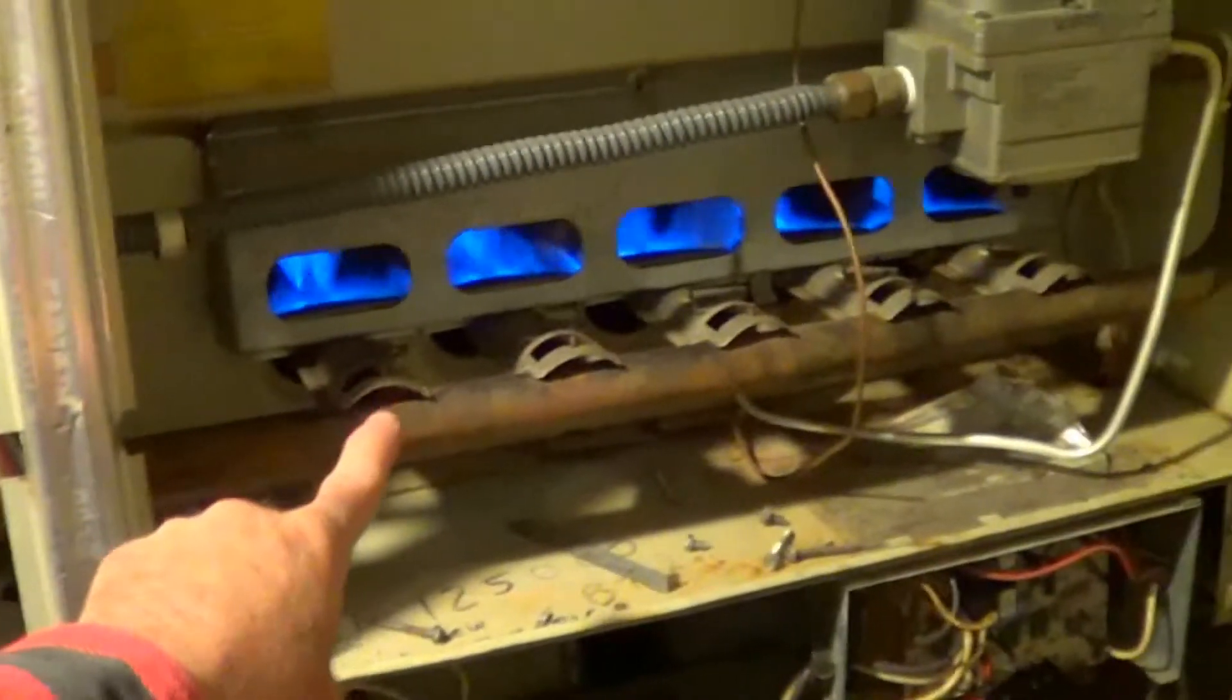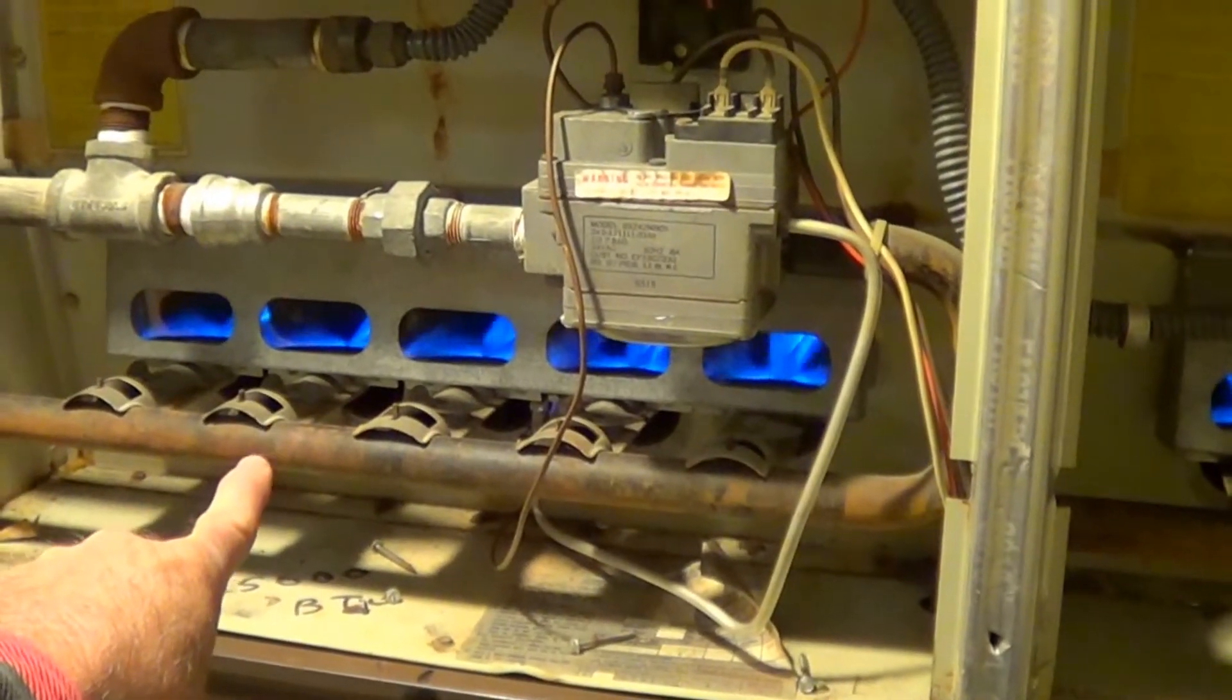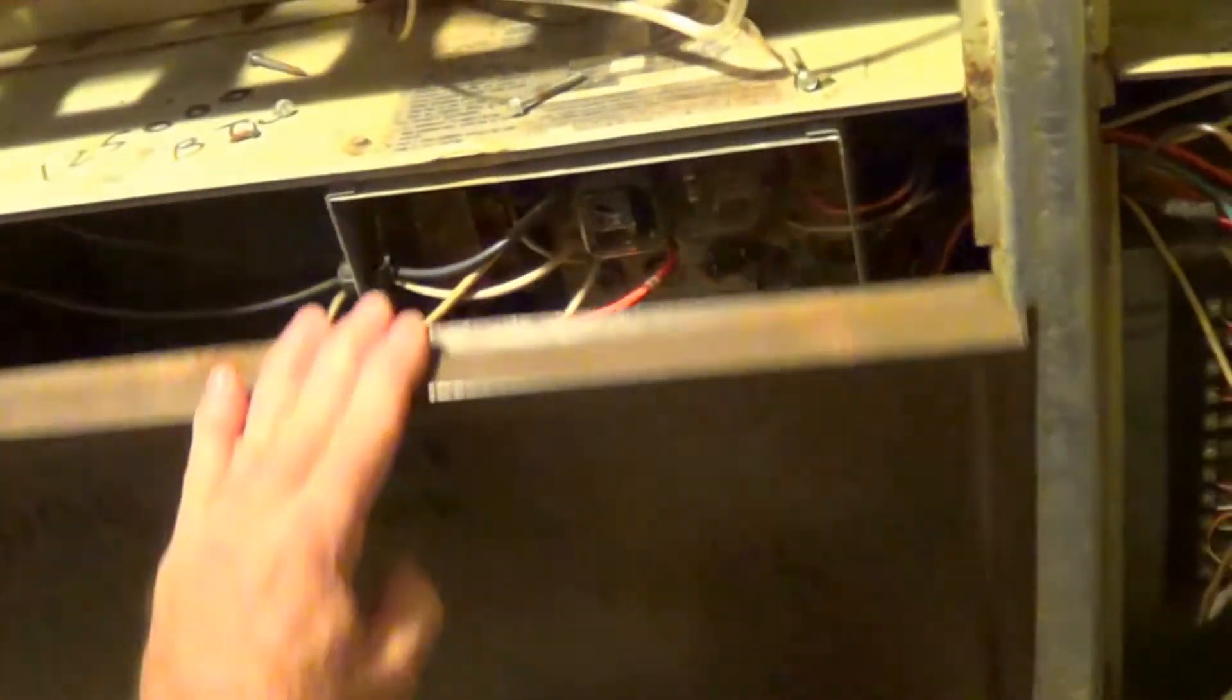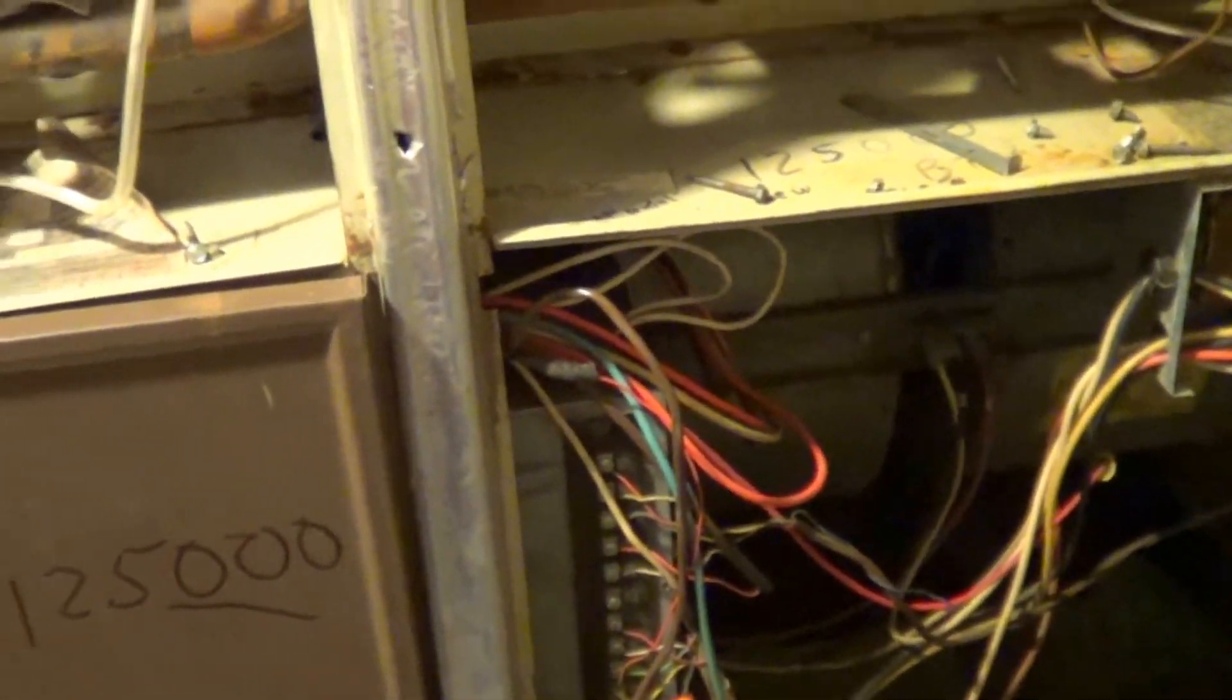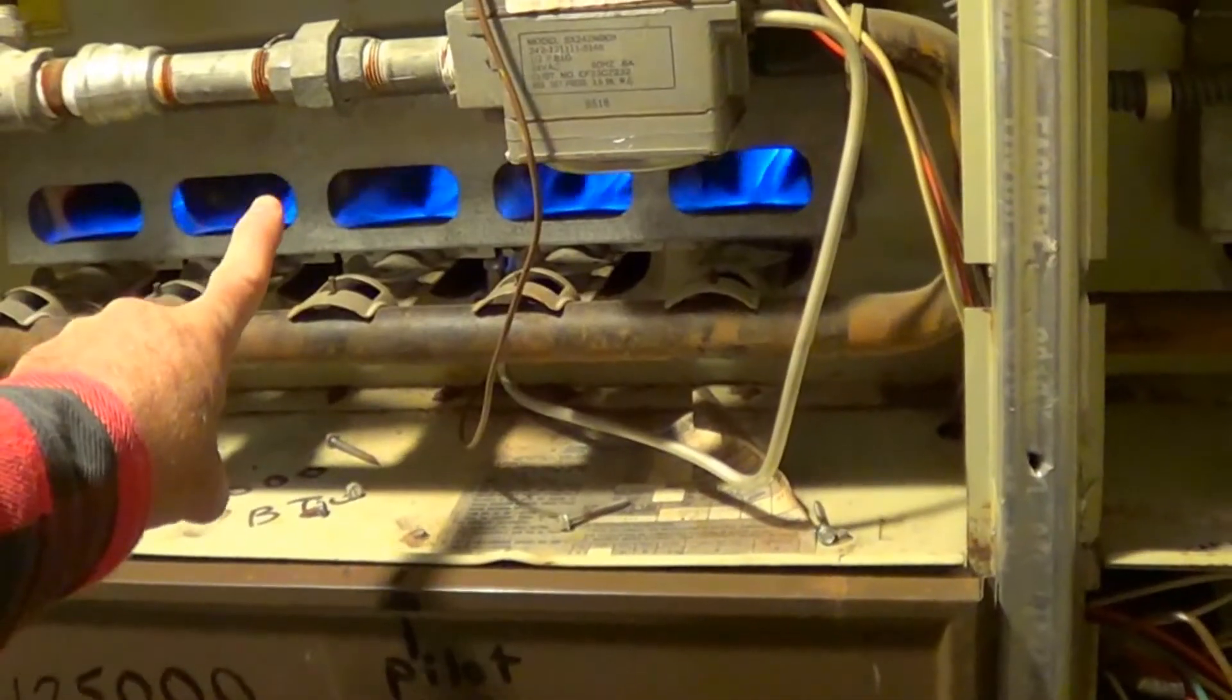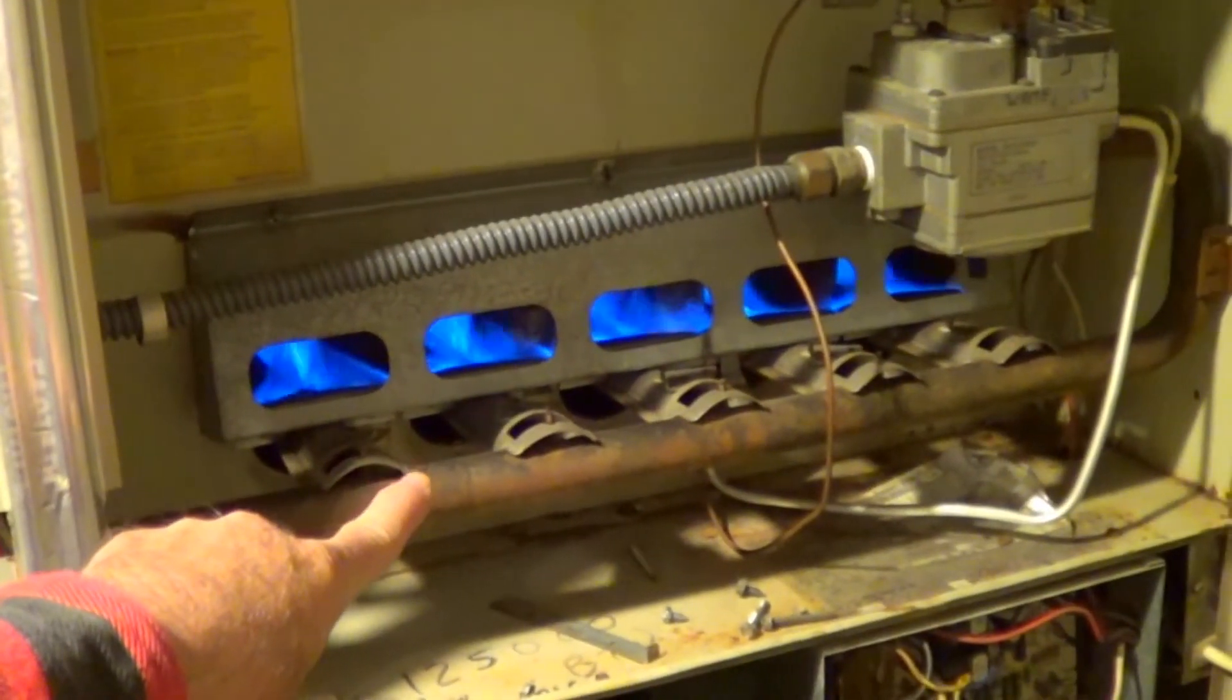Now I've got both sets of burners going. So in summary, what happens is this guy kicks on first, the right one, on a twinned unit. If there's a big delta T, it'll turn the left unit on. That's controlled by this twinning unit down here, which ties the two units together. Each one's got its own control board and they're twinned together, which is the two-stage thermostat. This will run until it's satisfied with the temperature. It'll first shut this guy off on the left, and then it'll shut the one on the right off.